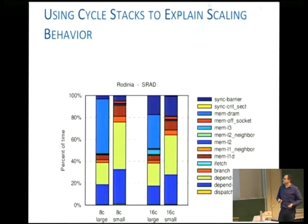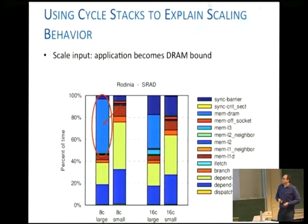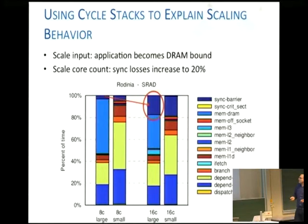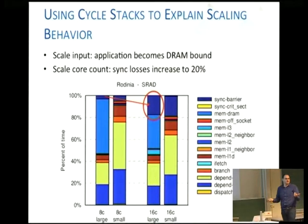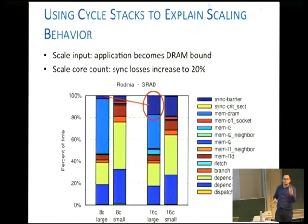There are other interesting things you can look at — for example, you can compare different input sets, and you can compare scaling from 8 cores to 16 cores to see how much time you're spending in synchronization versus actually doing computation.